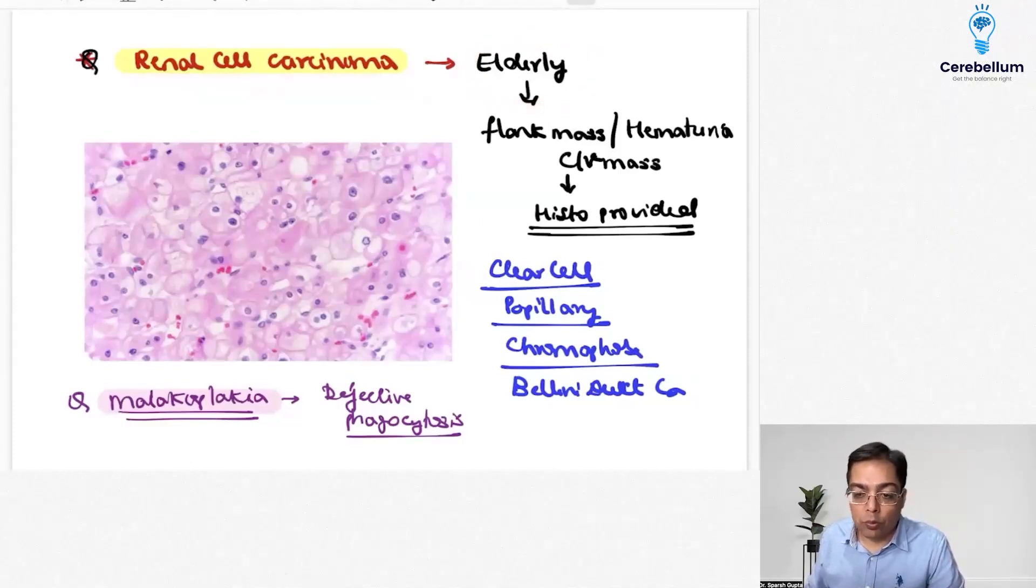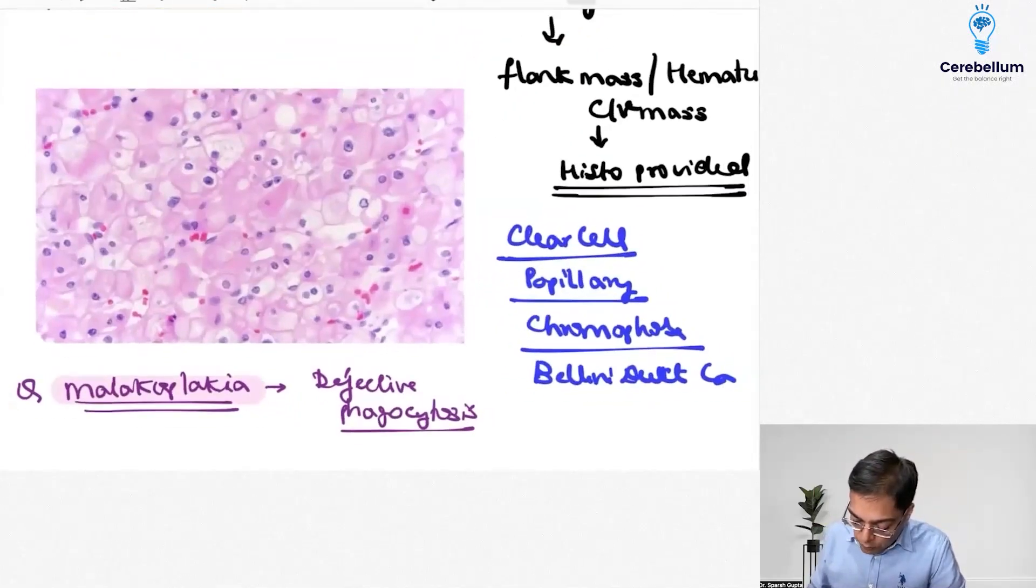...having pain as well and the histological image was provided which had the presence of perinuclear halo histopathologically and they asked you about the subtype of renal cell carcinoma that the patient was having.